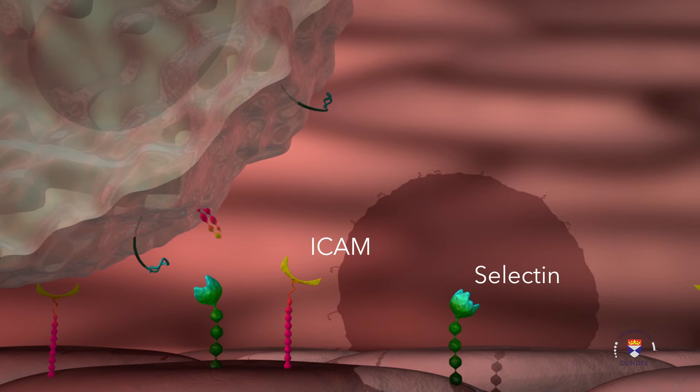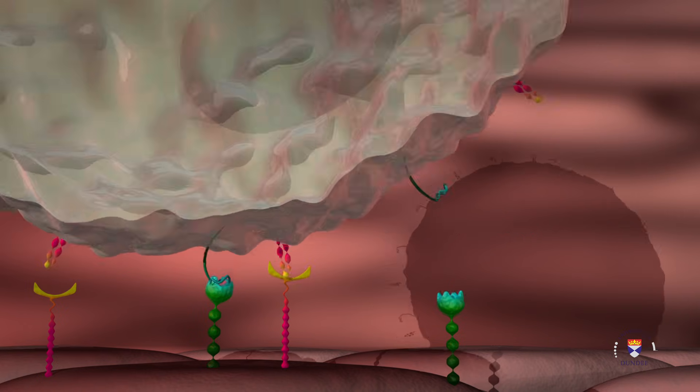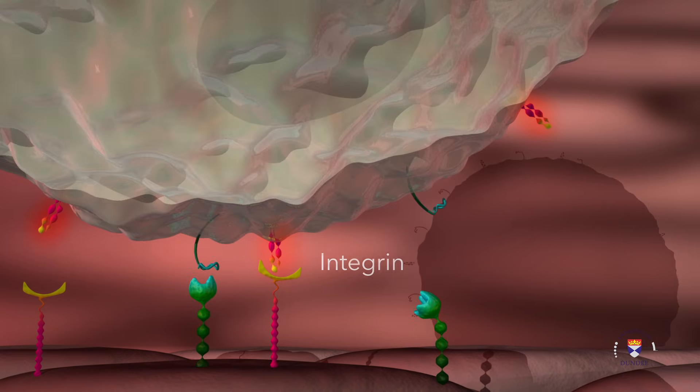The endothelial cells are also stimulated to start expressing selectin and ICAM proteins on their surface. Selectins bind to glycoproteins on the surface of cells and ICAM proteins bind to integrin, protein expressed on the surface of leukocytes.